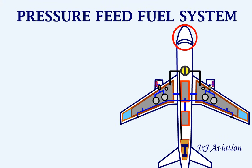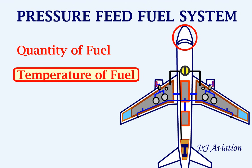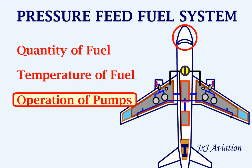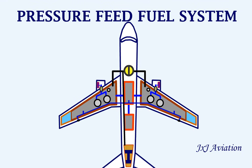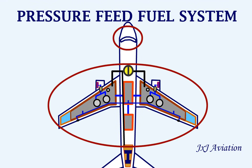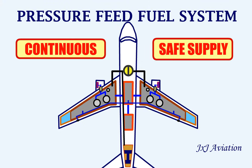In the cockpit, indications are provided for the quantity of fuel in each of the tanks, the temperature of the fuel, the operation of the pumps, and the cross-feed valve position. All these components and indications ensure a continuous and safe supply of fuel to the engines.